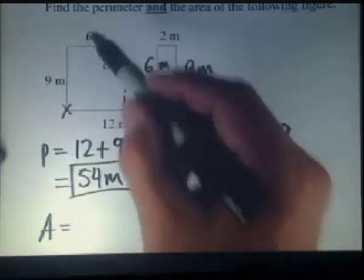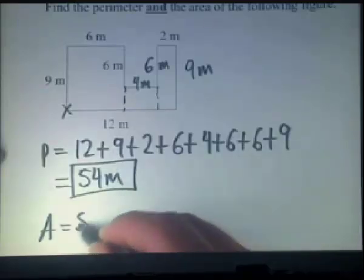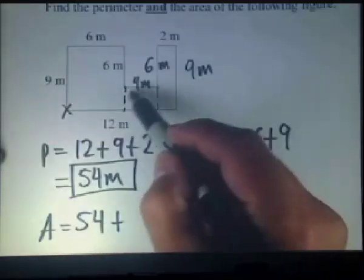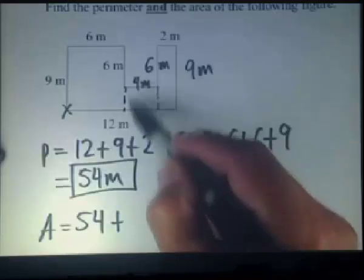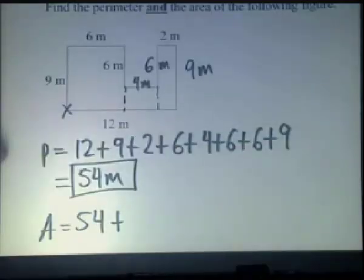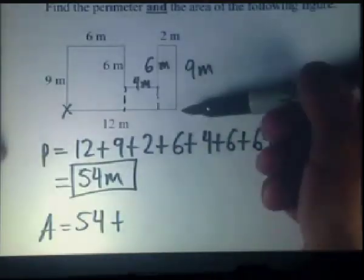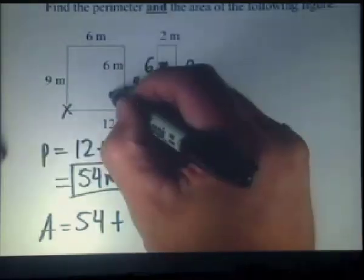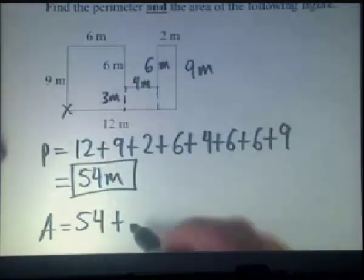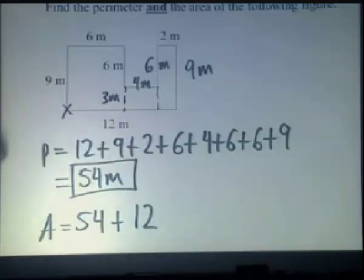The first area is 6 by 9, which gives us 54, plus this little smaller area. We know it's 4 by something. We've got to do another calculation. Note that this length is 9, and this is 6, leaving us 3 meters. So we have a 3 by 4 rectangle, which gives us an area of 12.